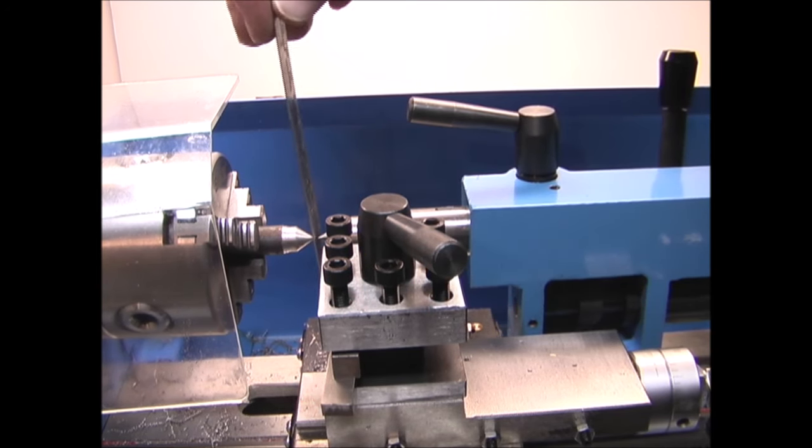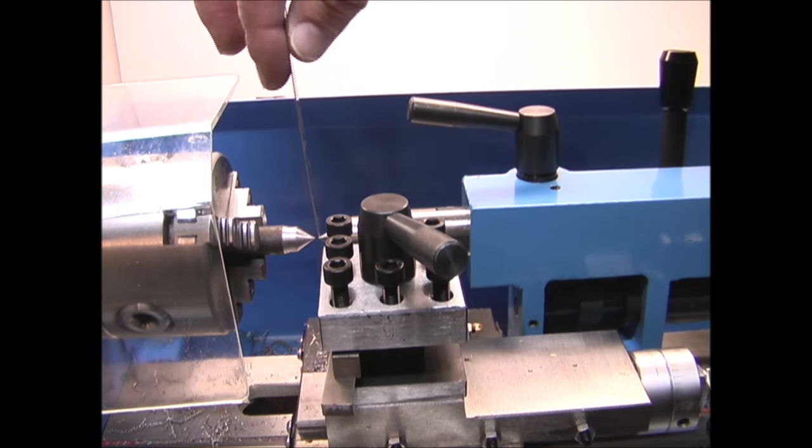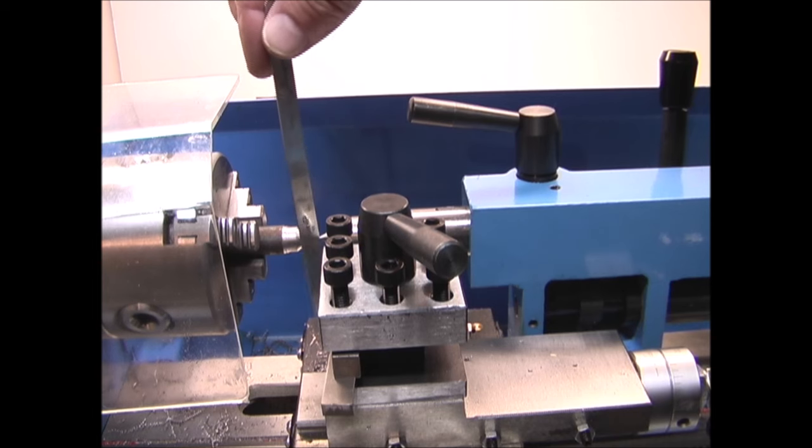If the points were not in line, you would see the straight edge tilted one way or the other, or twisted in one direction or the other. But since the points are lined up, it holds it vertical.